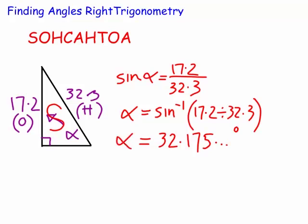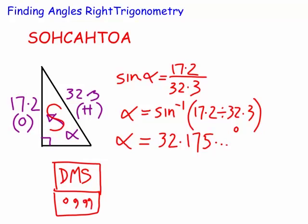Now, if I press the DMS button, you might remember, I actually used to call this, sometimes it's a DMS, or the degree button. These buttons will actually convert your decimal angle into a degrees, minutes, seconds answer. And if we have a quick look, I think it's 32 degrees, 10 minutes, and then I think it's 30.18 seconds.